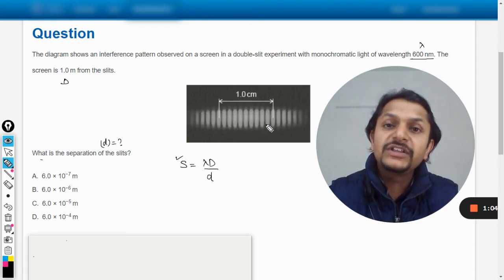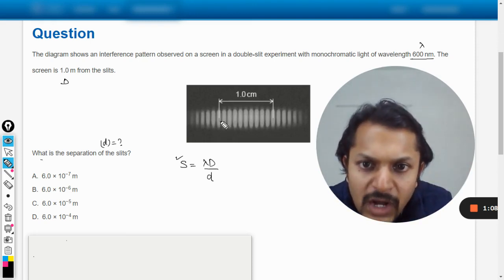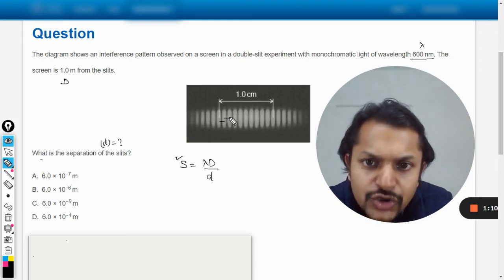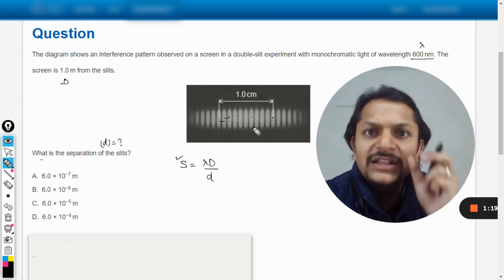Let us do it. Okay, so one, and then two, three, four, five, six, seven, eight, nine, and this will be ten. So total ten fringes are there in the spacing, in the distance one centimeter.